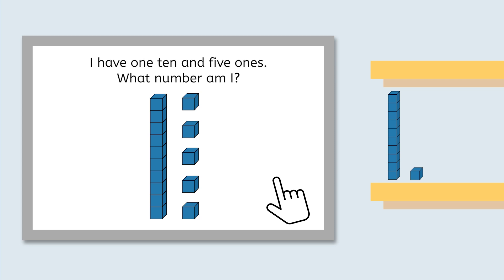Now we just need to count to find out which number this is. Remember, a ten block is worth ten, so we can start at ten and count on with the ones. Count with me. Ten, eleven, twelve, thirteen, fourteen, fifteen. The mystery number is fifteen.